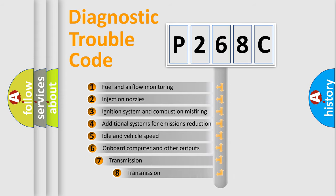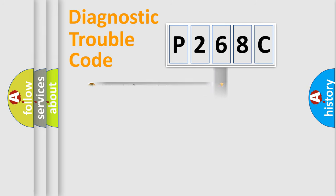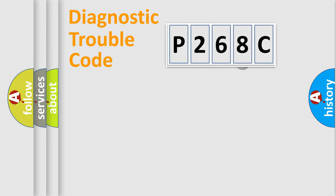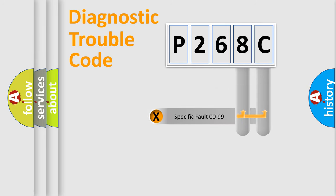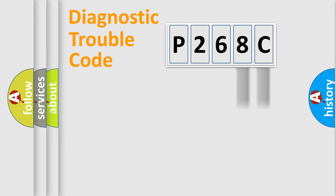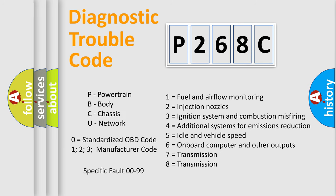The third character specifies a subset of errors. The distribution shown is valid only for the standardized DTC code. Only the last two characters define the specific fault of the group. Such a division is valid only if the second character code is expressed by the number zero.